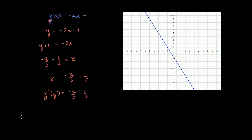This we started with the g of x, not an f of x. Make sure we get our notation right. Or we could just rename the y and say g inverse of x is equal to negative x over 2 minus 1 half.